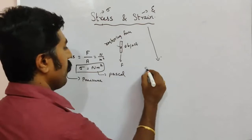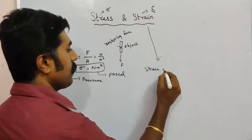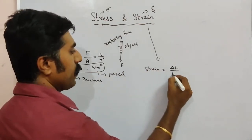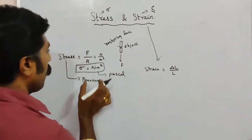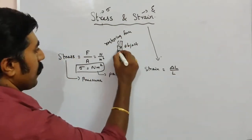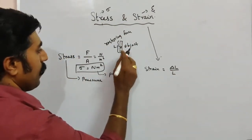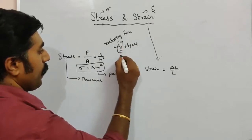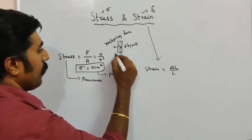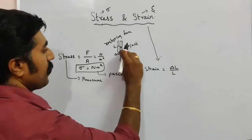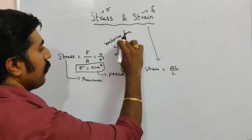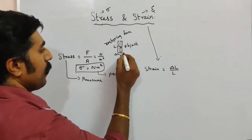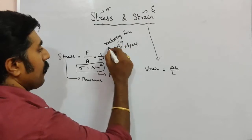Strain is defined as the change in size divided by the original size. The change in size is referred to as delta L, and the original size is the original length.